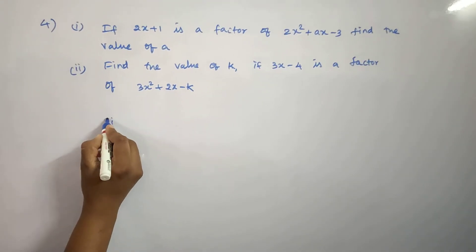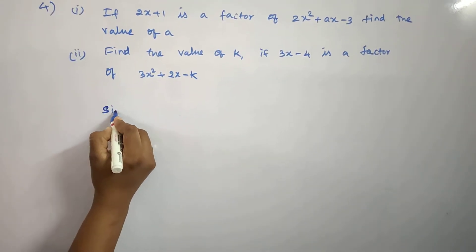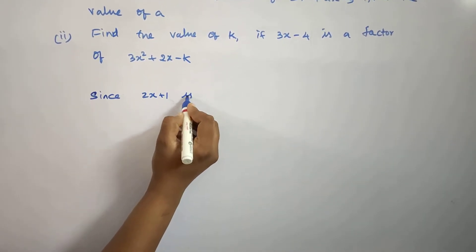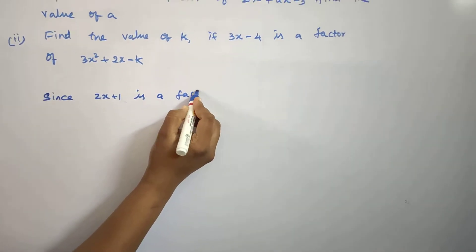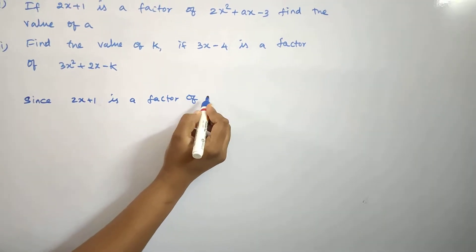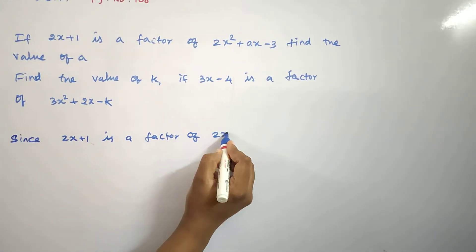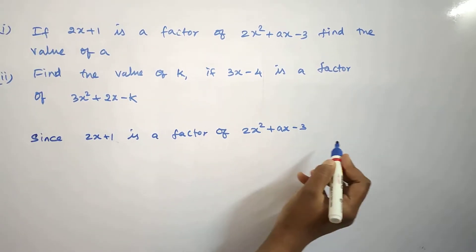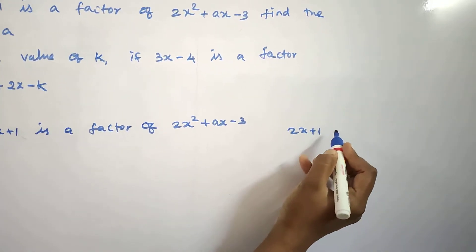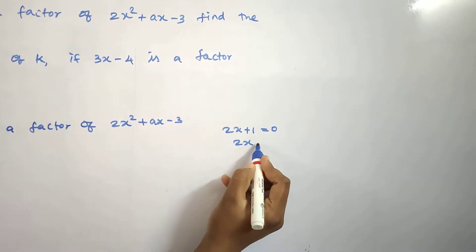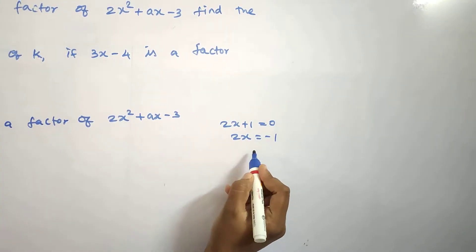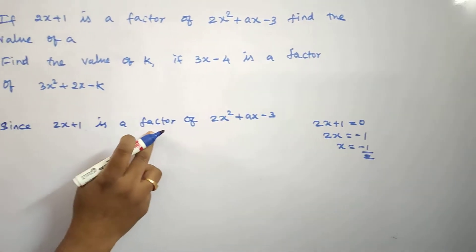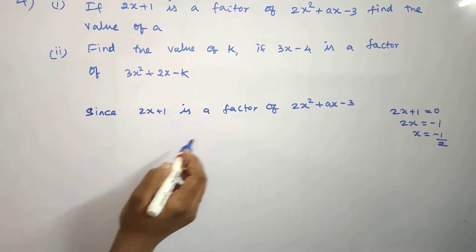Since 2x plus 1 is a factor of 2x squared plus ax minus 3, we set 2x plus 1 equal to 0, which means 2x is equal to minus 1, so x is equal to minus 1 by 2. Since it is a factor, the remainder is 0.